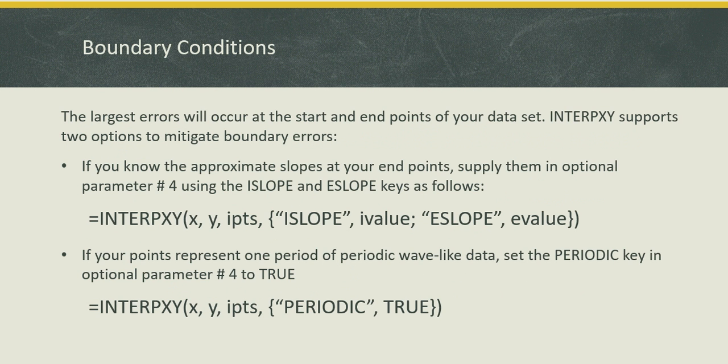Boundary conditions. The largest error will occur near or at the end points of your data point. There's two ways you can mitigate this. If you know the approximate slopes at your end points, supply them using the keywords I slope and E slope in optional parameter number four. And if you know that your data comes from a periodic wave-like set, then you can turn the periodic key value to true also in optional parameter four. And that will take care of your boundary conditions.